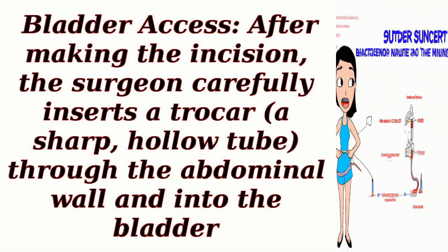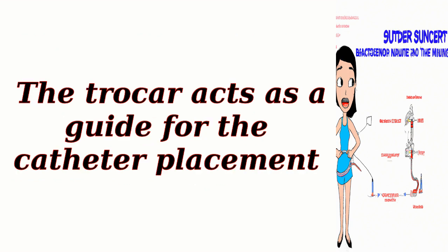Step 4: Bladder access. After making the incision, the surgeon carefully inserts a trocar — a sharp, hollow tube — through the abdominal wall and into the bladder. The trocar acts as a guide for the catheter placement.